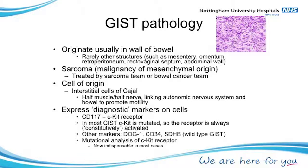GIST cells often express receptors, though not all of them. These receptors have mutations which we can identify in the pathology lab. The mutations are becoming increasingly important. The most common receptor is the CKIT receptor, also known as CD117 — just two different names for the same thing, like a drug name and a trade name. These receptors are quite important because they drive what happens in a GIST.